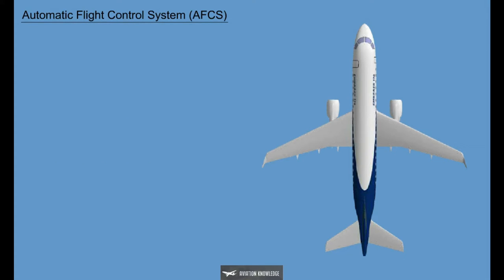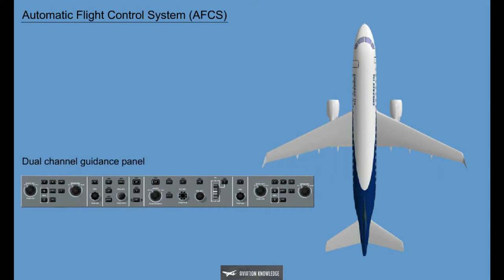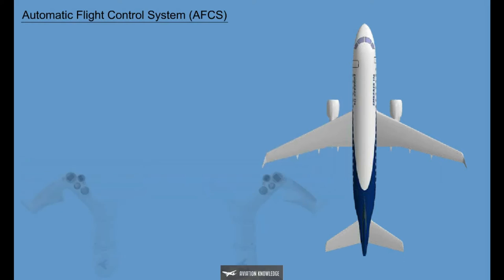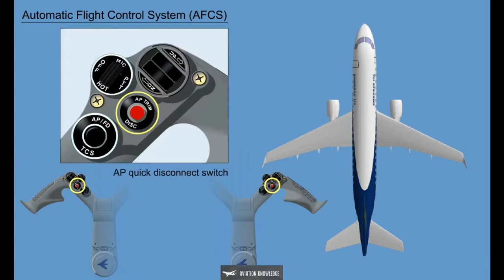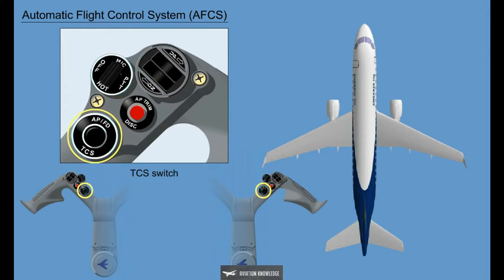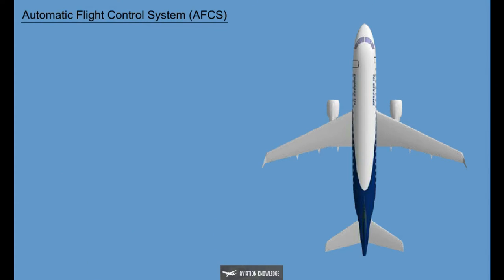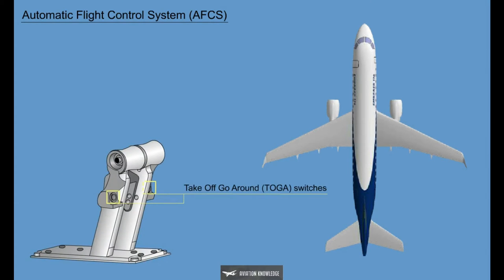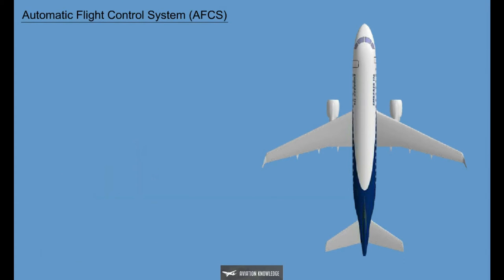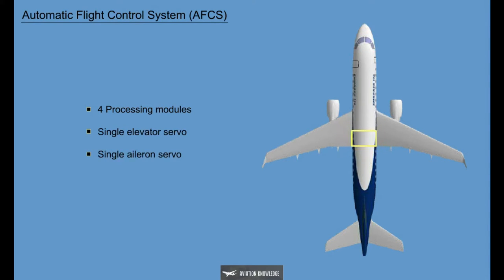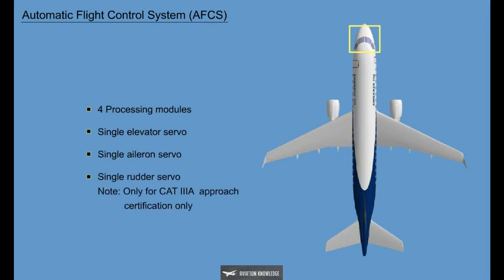The AFCS system has the following components: Dual Channel Guidance Panel, Two Autopilot Quick Disconnect Switches, Two TCS Switches, Two TOGA Switches, Four Processing Modules, Single Elevator Servo, Single Aileron Servo, and a Single Rudder Servo.